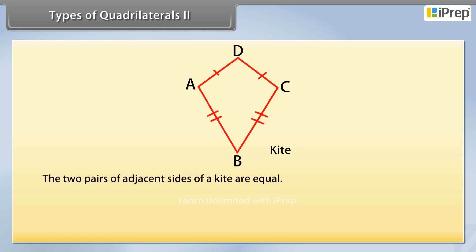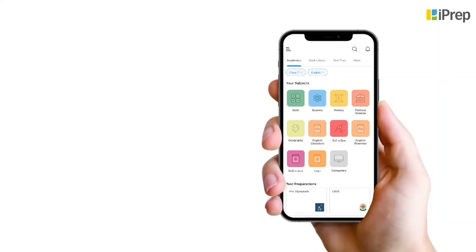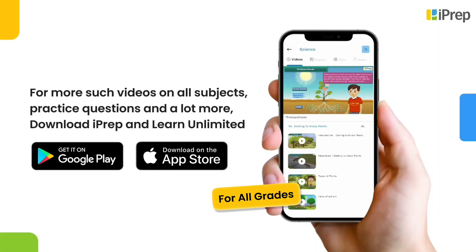The two pairs of adjacent sides of a kite are equal. Here AD is equal to DC and AB is equal to BC. So ABCD is a kite.